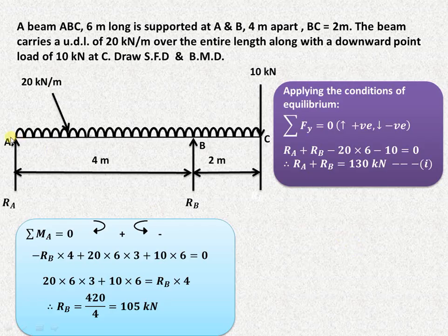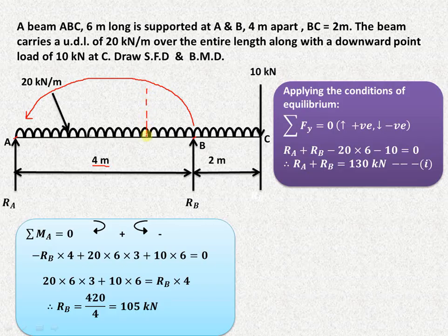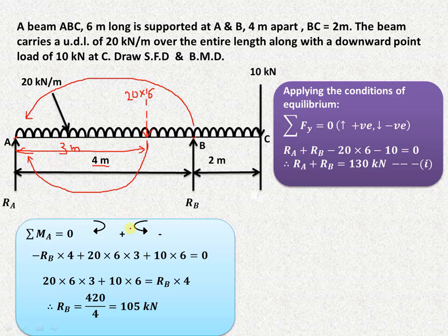Now we take the moment about point A. RB will produce an anticlockwise moment about A, so minus RB, and the perpendicular distance from B to A is 4 meters, so minus RB into 4. The UDL of magnitude 20 into 6 will act at the center of the 6-meter span, that is at 3 meters, and it produces a clockwise moment about A, so it is positive.